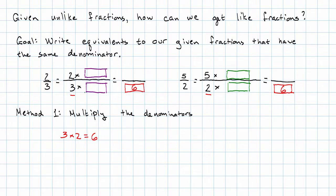What did I need to multiply 3 by in order to get 6? I multiplied it by 2, I'll multiply the numerator also by 2, and I get 4. What did I need to multiply 2 by in order to get 6? I multiplied it by 3, I'll multiply the numerator also by 3, and I'll get 15. So my like fractions then are 4 sixths and 15 sixths.